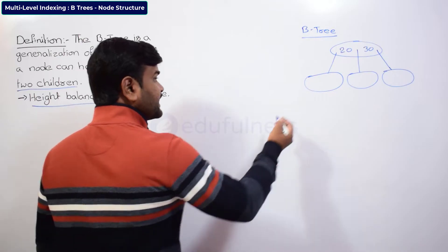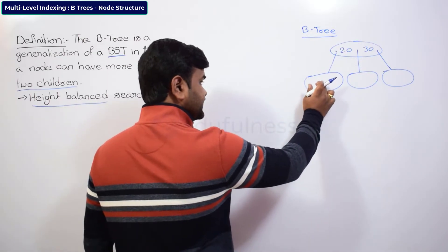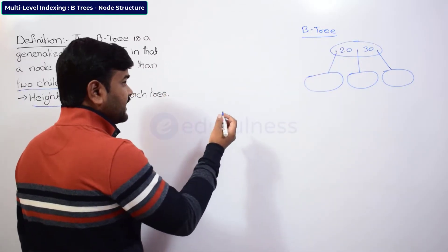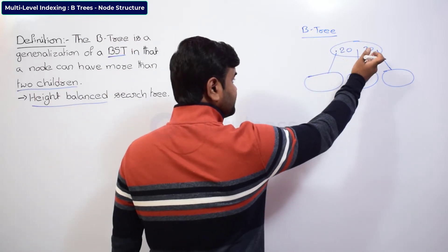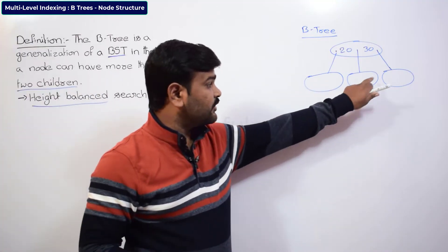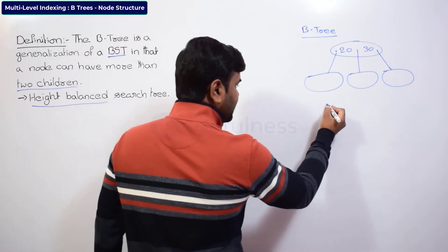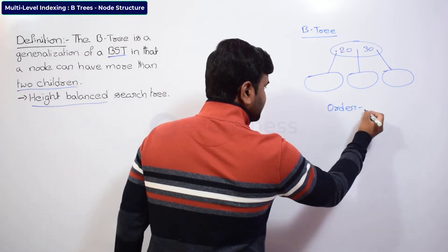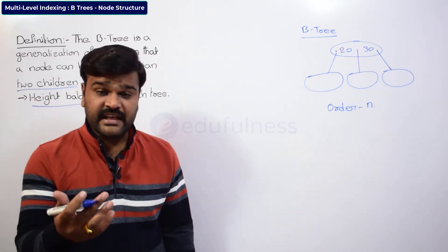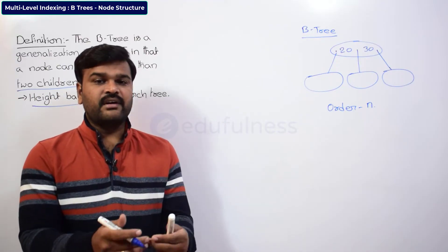Here if you see, this is a block pointer — or children — this is the children of this node. So, how many pointers you can give at maximum, that means how many children are allowed: three nodes. That is what the order. Where order is n, the meaning is n children at most allowed. Like in binary trees, two children at most are allowed for any node.